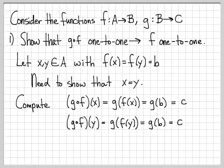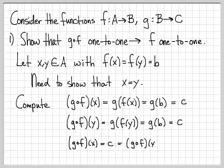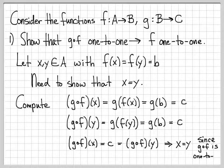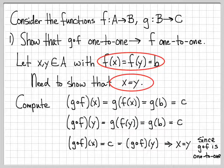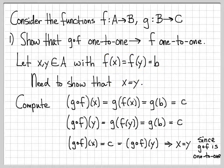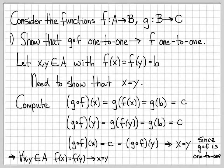So I've computed g∘f(x) = c and g∘f(y) = c — they're both equal to the same thing. We know that g composed of f is a 1-to-1 function, so the only way this can happen is when x equals y, because that's the definition of a 1-to-1 function. We've just established that x = y, which is what we needed to show. For all x, y in A, f(x) = f(y) implies x = y. F is 1-to-1.